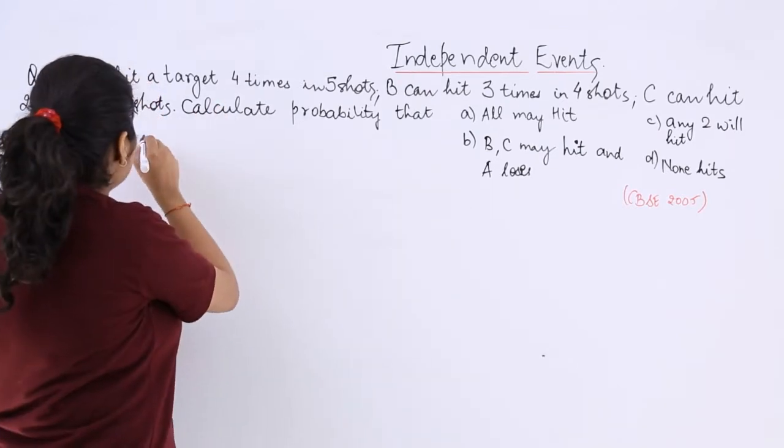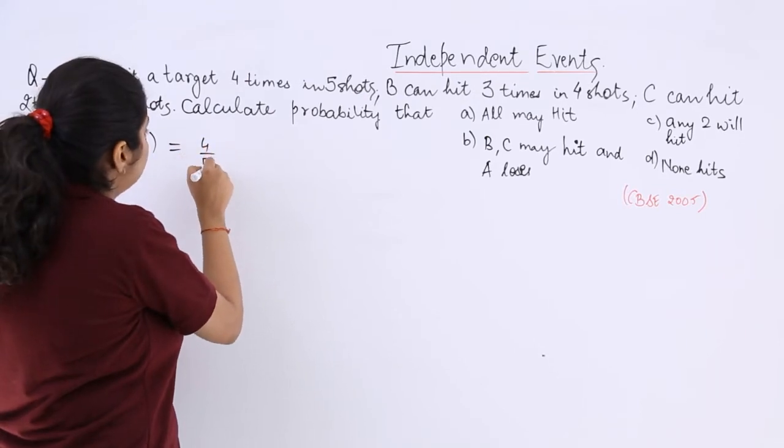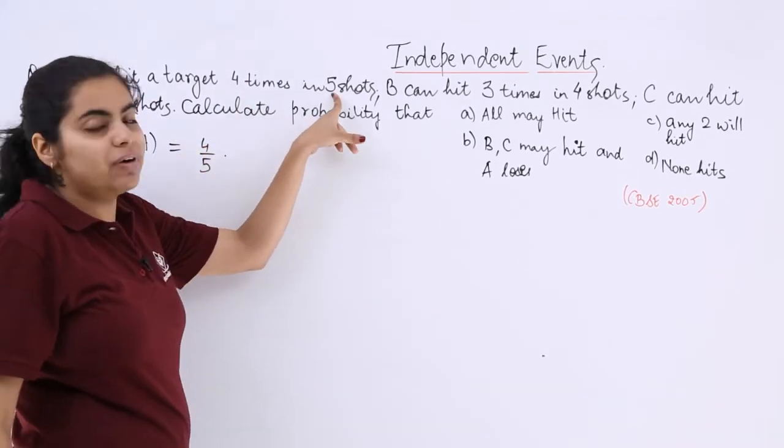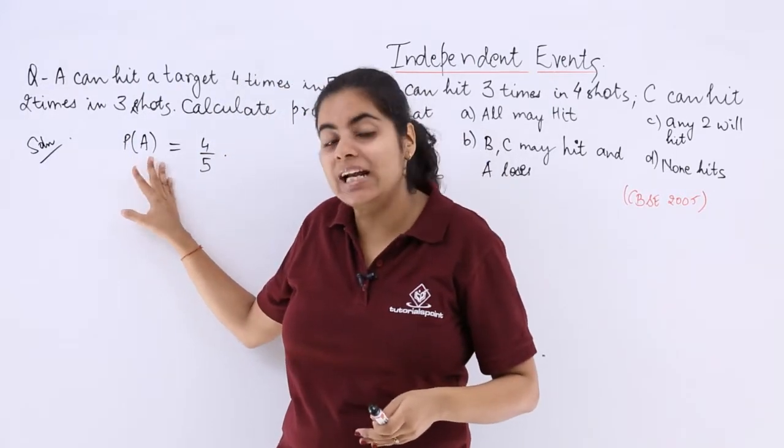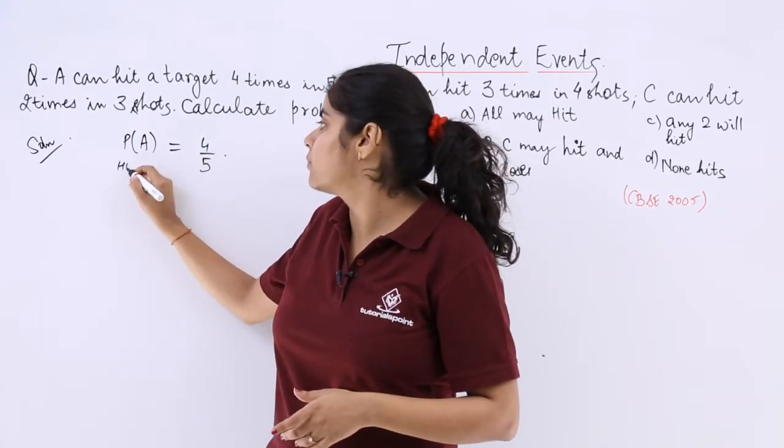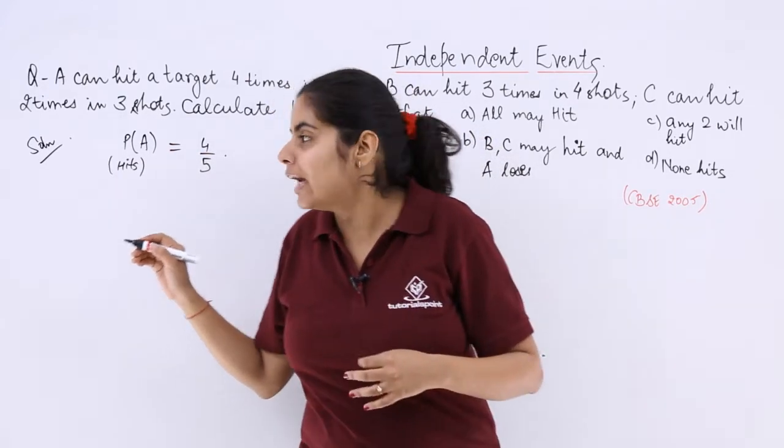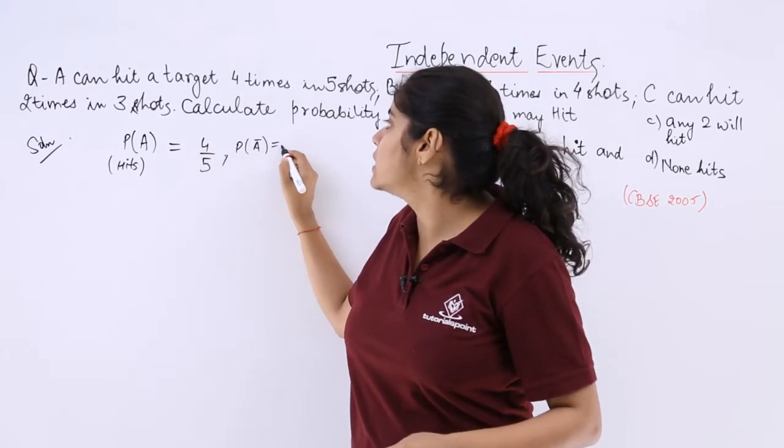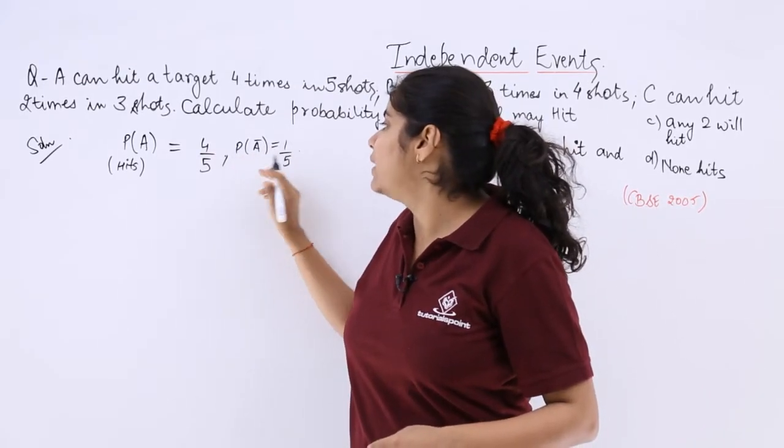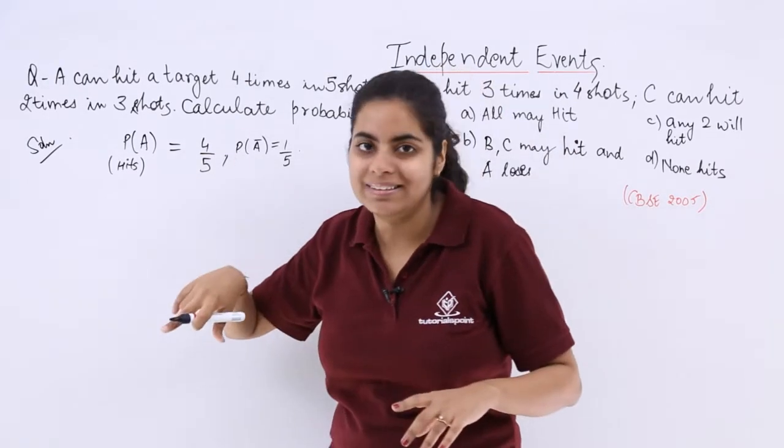So if I write A has the probability 4/5 because four times in five shots it wins. So whenever I write probability of A that means it hits. But if I write probability of not A that means it loses, it is not able to hit. So that will be obtained by subtracting this from one.